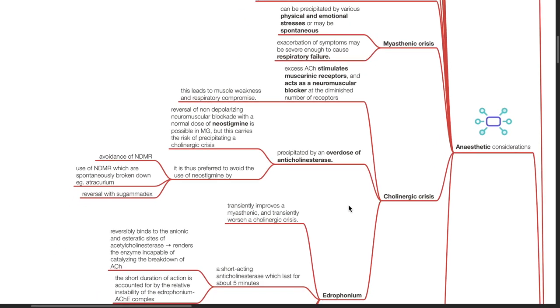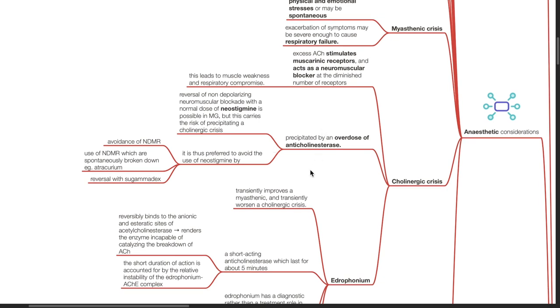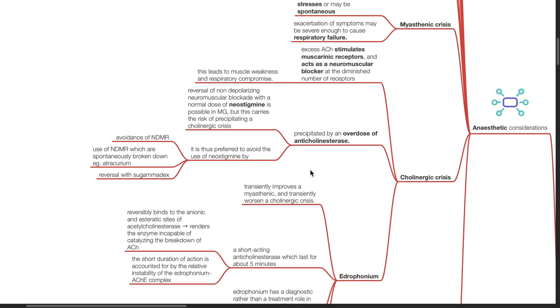Cholinergic crisis. Excess acetylcholine stimulates muscarinic receptors and acts as a neuromuscular blocker at the diminished number of receptors. This leads to muscle weakness and respiratory compromise. Cholinergic crisis may be precipitated by an overdose of anticholinesterase.